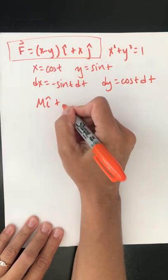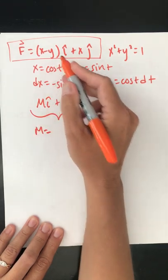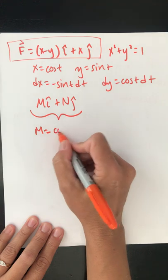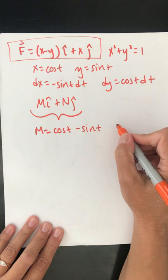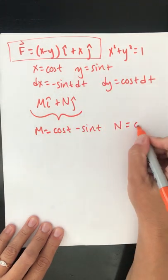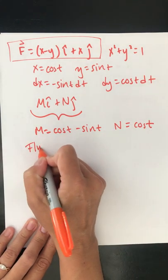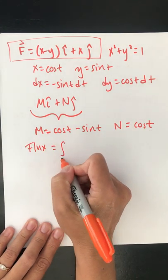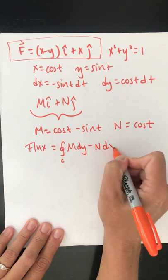I want to write this in terms of these variables. So remember, I want m i-hat plus n j-hat. So m is going to be x minus y, which is cosine t minus sine t. And n is going to be x, which is cosine t. So flux is going to be m dy minus n dx.